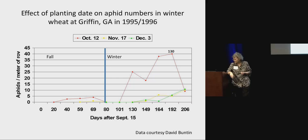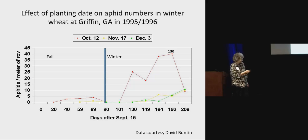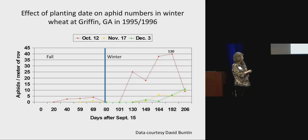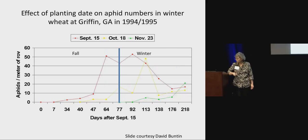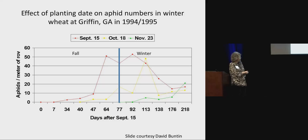This is an example from David Bunton showing the effect of planting date on aphid numbers in winter wheat. He has three planting dates — notice the red one. If you plant early, you're going to end up with more aphids in the fall. Then in the springtime when aphids start building up again, because you had more going in, you're going to have more throughout the season. The later you plant, there are fewer warm days and less time for aphids to grow and develop, so you see lower aphid numbers.